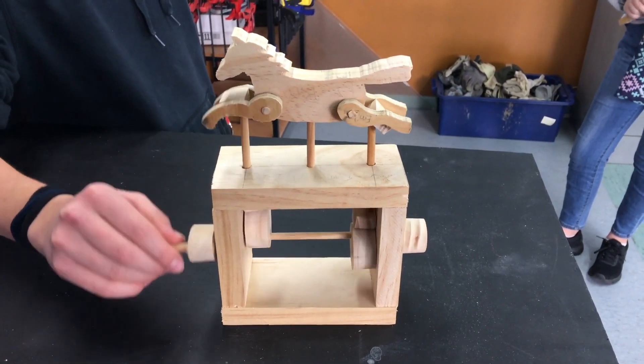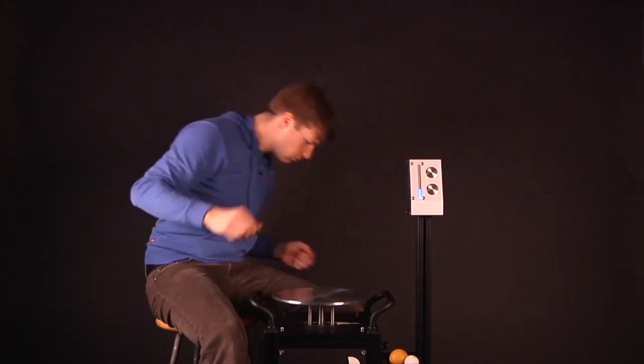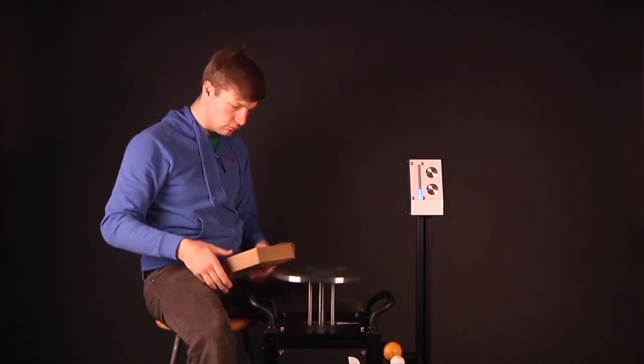the motions are as predetermined as any other cam driven automaton. A juggling automaton doesn't know if it is juggling or not. It's just going through the motions.